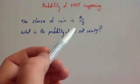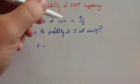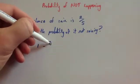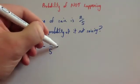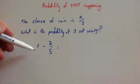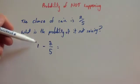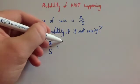The chance of rain is 2 fifths. What is the probability of it not raining? Well, again, you do 1 subtract the probability of rain. So the probability of rain is 2 fifths. So we're going to do a whole take away 2 fifths. Well, a whole is 5 fifths. So whatever the denominator is, it's going to be 5 fifths. So 5 fifths take away 2 fifths is 3 fifths.